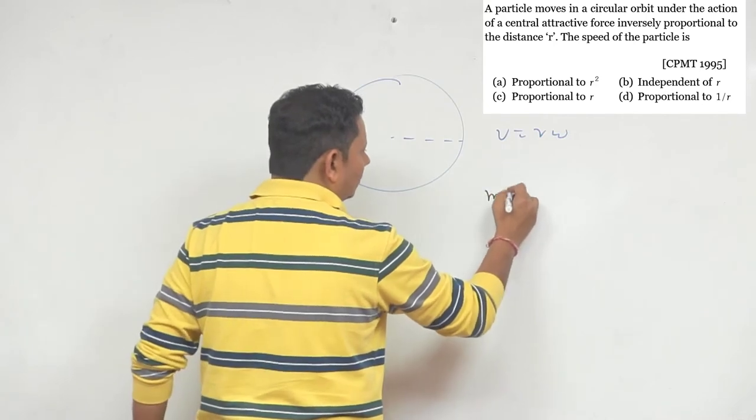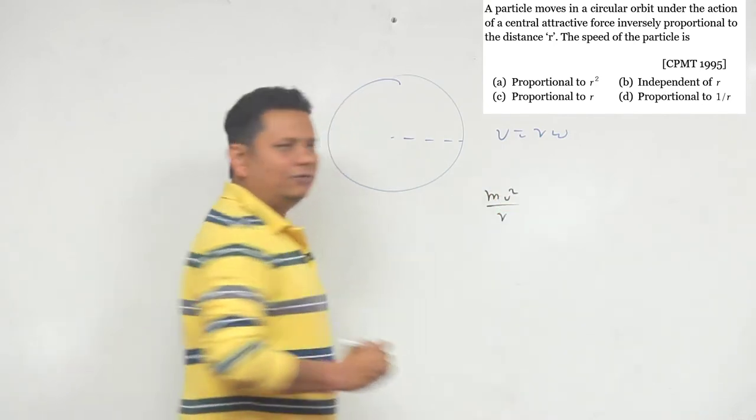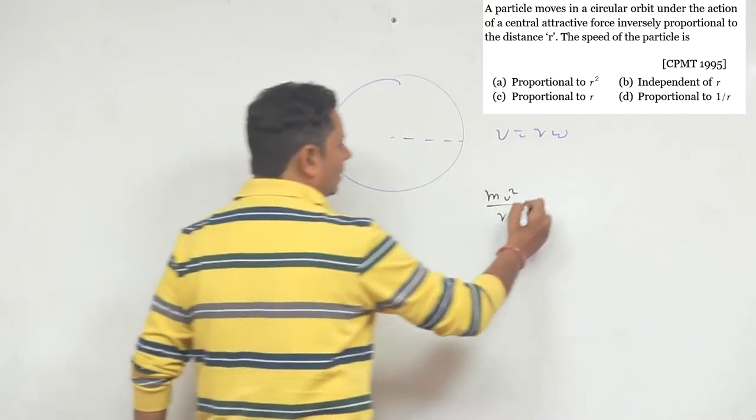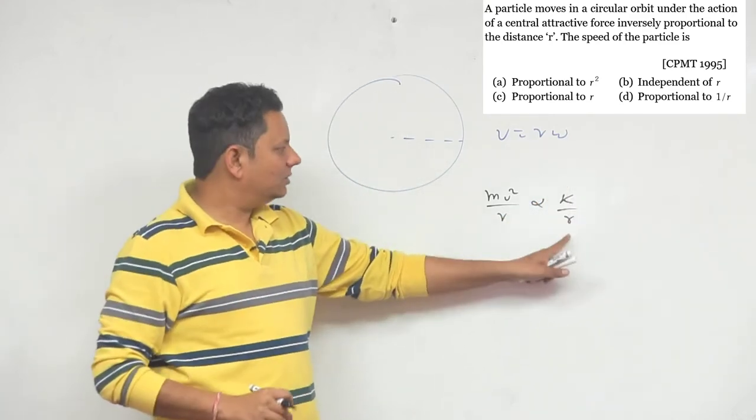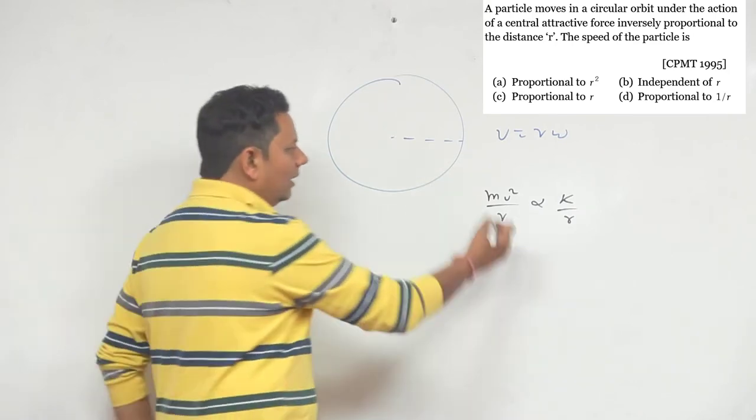By definition, mv square by r. Now this is proportional to k by r. This is given, where k is some proportionality constant, proportional to one by r.